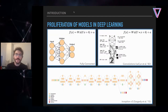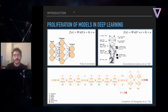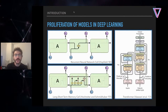To start, I'd like to give motivation for why we should care about understanding the prior over functions that neural networks place. One of the things we've seen in the past few decades, especially recently, is a proliferation of models in deep learning. We've expanded from fully connected networks to convolutional networks, then inception, residual networks — and in language modeling, from simple recurrent cells to LSTMs, and now transformer architectures.